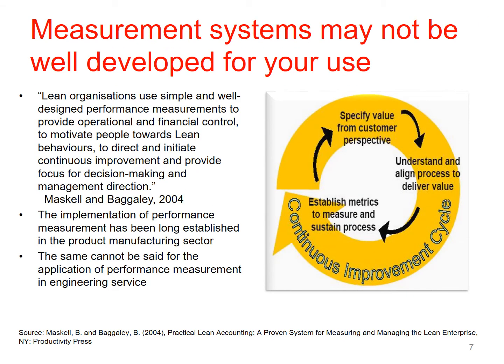Measurement systems may not be well developed for your use. Lean organizations use simple and well-designed performance measurements to provide operational and financial control, to motivate people towards lean behaviors, to direct and initiate continuous improvement, and provide a focus for decision making and management direction. We start the continuous improvement cycle by specifying value from the customer's perspective — what the customer actually values, not what we think they value; we ask them. Once we've understood that, we can align our processes to deliver upon that value, establish metrics to measure and sustain the process, then go back and ask again whether we're delivering customer value. Customer value is dynamic, so we've got to keep going through this cycle.